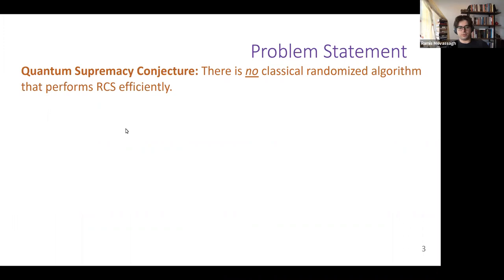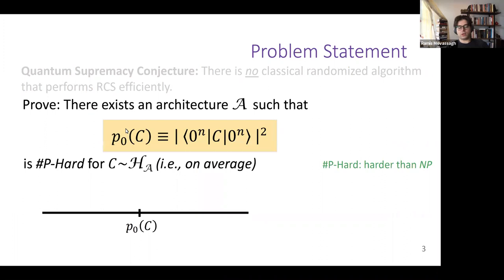The conjecture is that there is no classical randomized algorithm that performs random circuit sampling (RCS) efficiently. For quantum complexity-theoretical reasons, it is sufficient to show that this quantity—the probability amplitude of starting from the all-zeros state, running the circuit, and measuring the probability amplitude on the all-zeros state—is #P-hard.